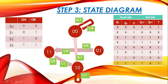For state S2(10): if input X=0, the next state is 00 and output Y=1, giving transition 0/1. If input X=1, the circuit stays in state 10 and output Y=1, giving transition 1/1.